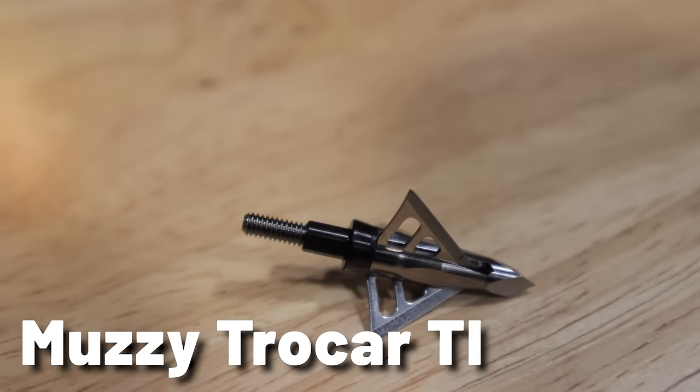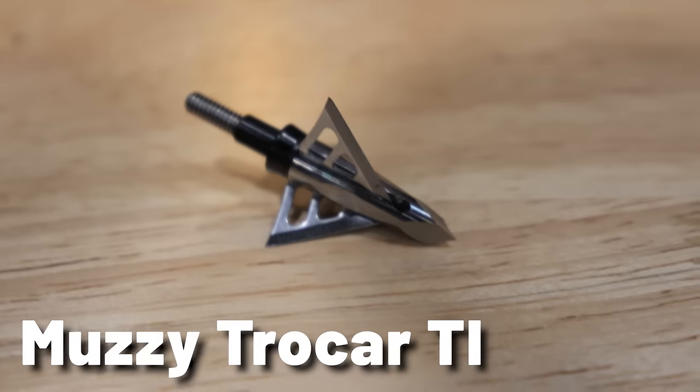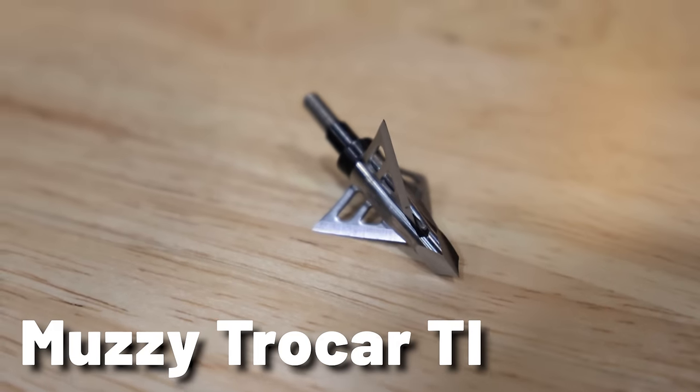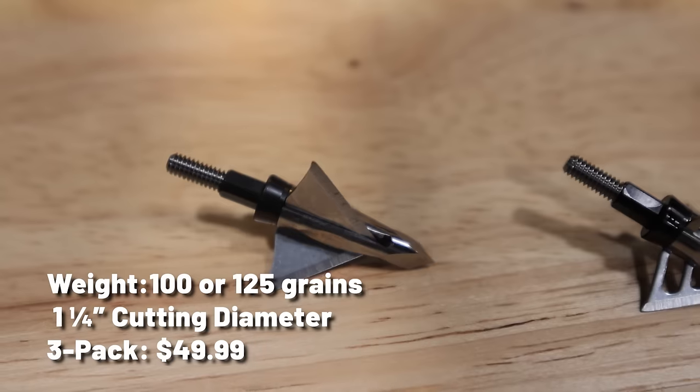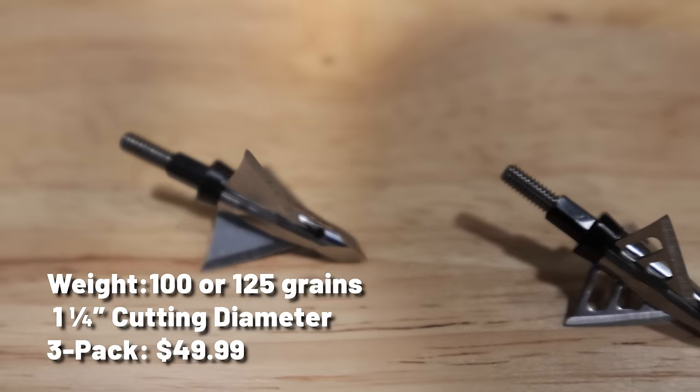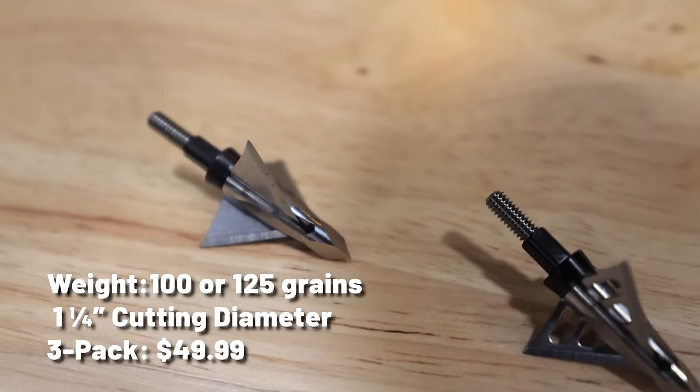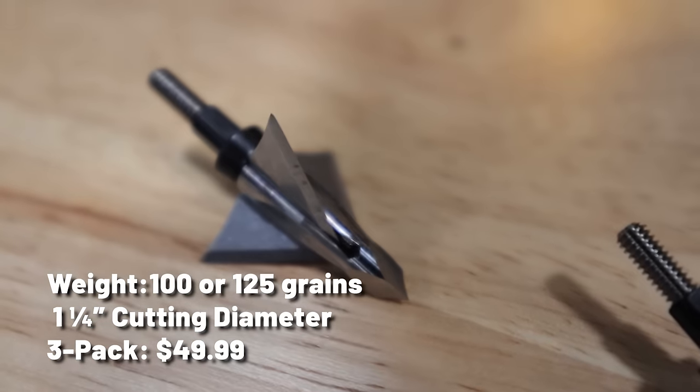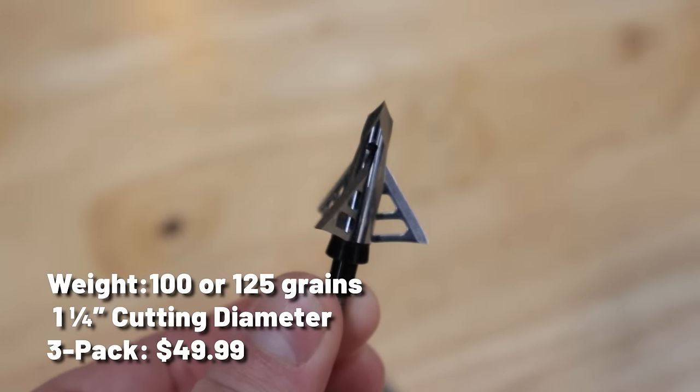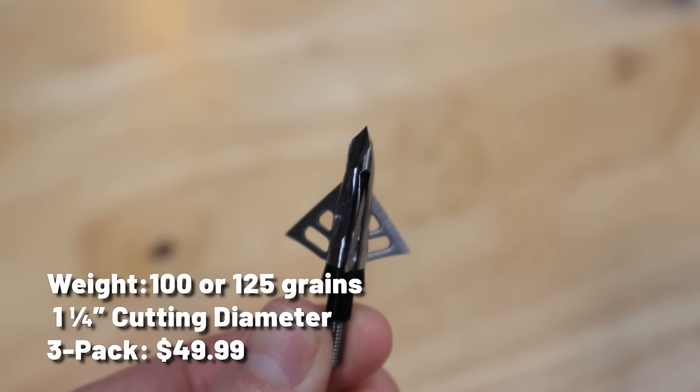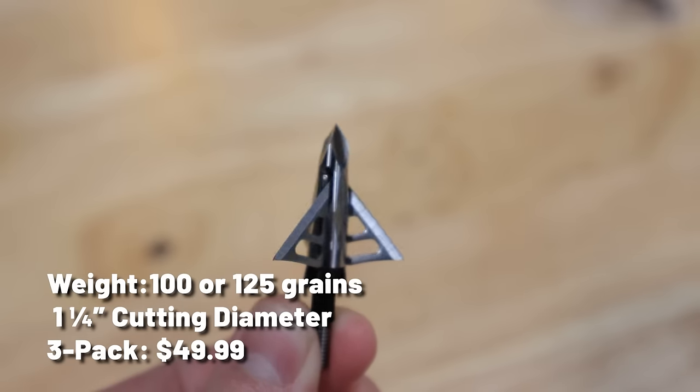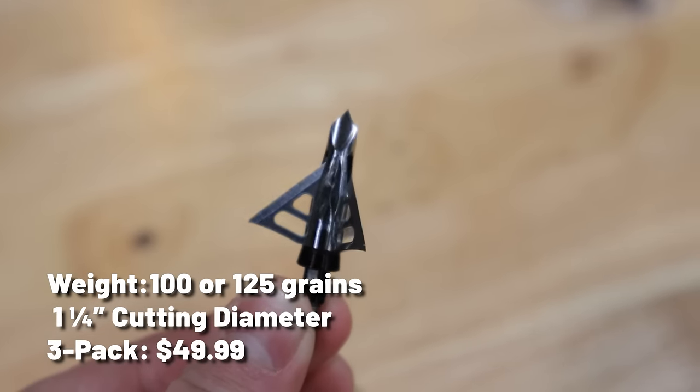Muzzy Trokar Ti. As the name suggests, the new Trokar Ti is made from a one-piece titanium ferrule combined with your choice of three solid or vented 39 thousandths thick stainless steel blades. The Trokar Ti features offset blades that can be adjusted to either left or right offset to match the helical and spin of your arrows. The Trokar Ti sports a 1 and 1 quarter inch cutting diameter, is available in both 100 and 125 grain options, and is going to retail for $49.99 for a three-pack.